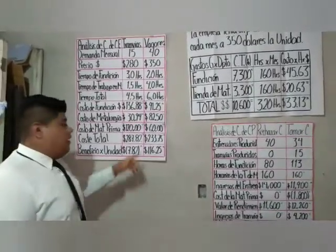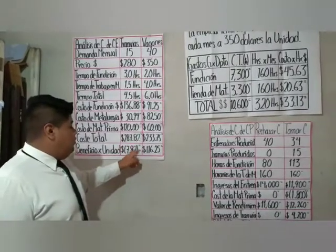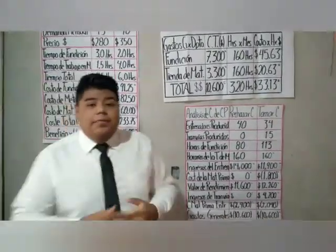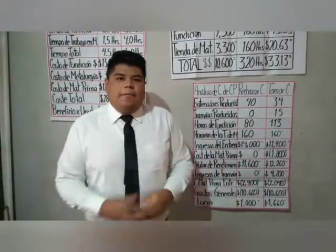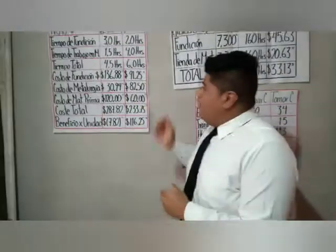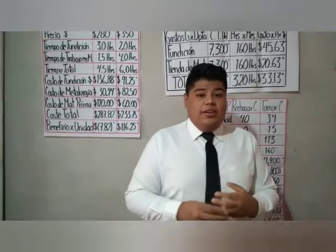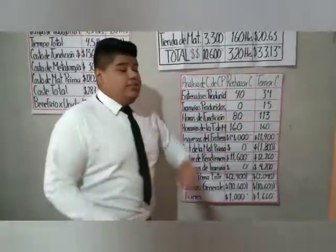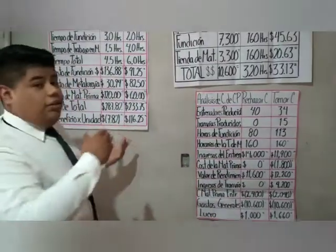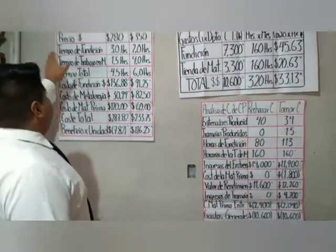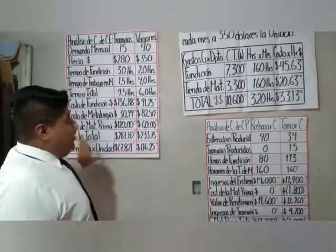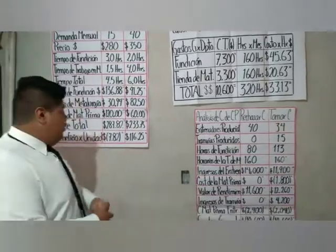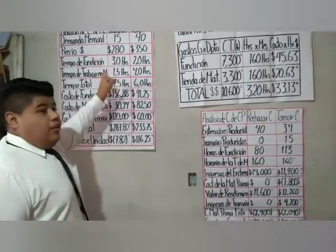Esto quiere decir que la empresa va a perder $7.82 dólares por cada tranvía fabricada. El jefe de operaciones y el contador sabían que la empresa iba a perder dinero por cada tranvía. Con el análisis de costos estándar y el análisis de costos de producción se determina el costo por cada unidad de tranvía y de vagón.